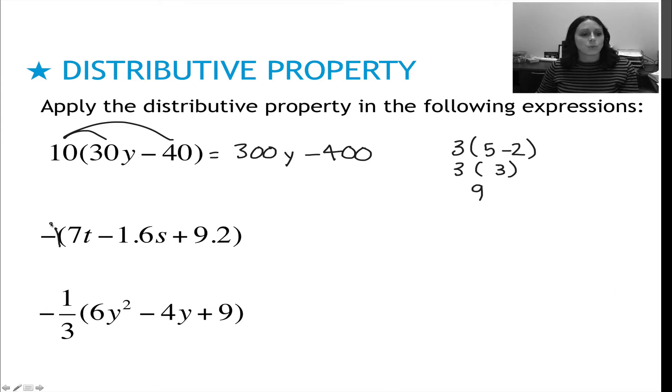Again, here I've got a negative 1. So negative 1 times 7t is negative 7t. Negative 1 times negative 1.6 would be positive 1.6s. And then a negative times a positive gives me a negative, and it's 9.2.